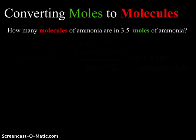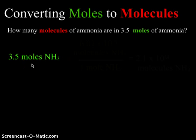Now let's look at the reverse process — converting moles to molecules. How many molecules of ammonia are in 3.5 moles of ammonia? We start with 3.5 moles of NH₃.